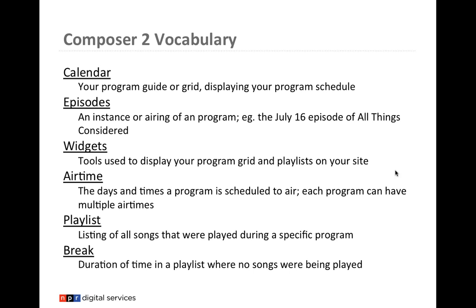The next term is playlist, also known as a song list — all the songs played during a specific episode of a program. The last term is break, which is a new function in Composer 2. A break is a duration of time in your playlist where no songs were being played. For example, if your host takes five minutes at the beginning of the show to welcome listeners and discuss local news, that would be a break in the playlist.